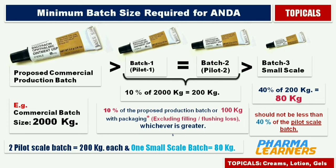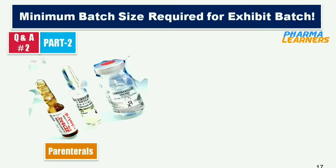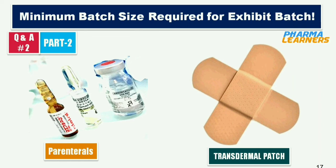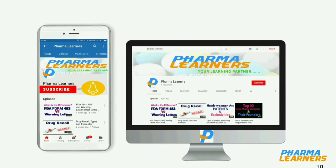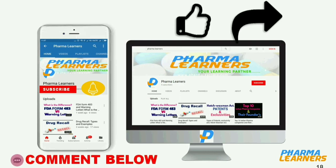That covers the exhibit batch size requirements for ANDA batches for solid orals, liquid orals, and topical dosage forms. In my next tutorial I will discuss parenterals and transdermal patches exhibit batch size requirements and calculations. Thanks for watching. Please give a thumbs up if you liked this video, share it with your friends and colleagues, and share your feedback in the comment box below. If you have not subscribed to this channel, please subscribe and hit the bell icon so that you get notifications on all my tutorials.